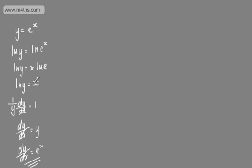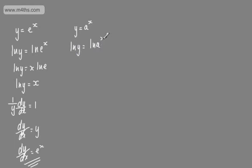Now let's move this on and say we have some positive constant a, such that y is equal to a to the x. This isn't e — it could be 2, it could be 5, it could be 10. We're going to replicate the approach to find the derivative of y is equal to a to the x. Taking logs of both sides, the natural log of y is equal to the natural log of a to the power of x. Bringing the power down, the natural log of y is equal to x times the natural log of a.